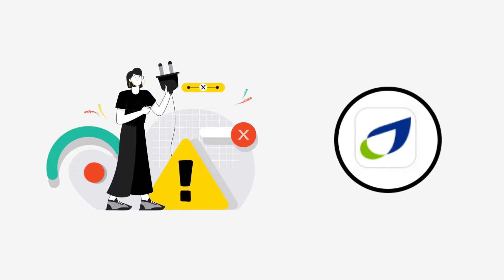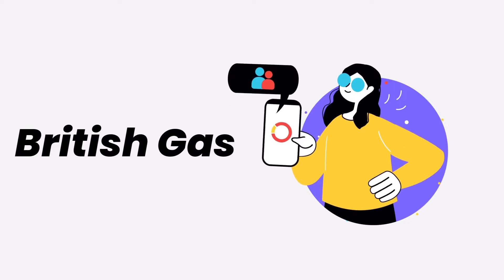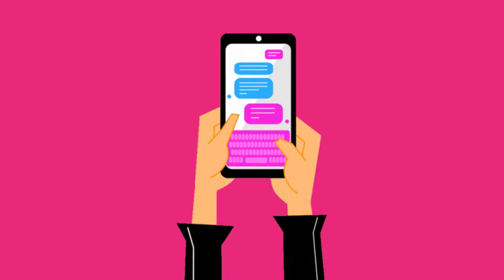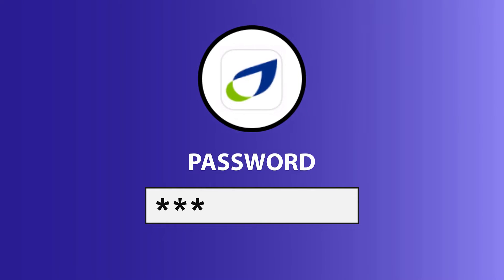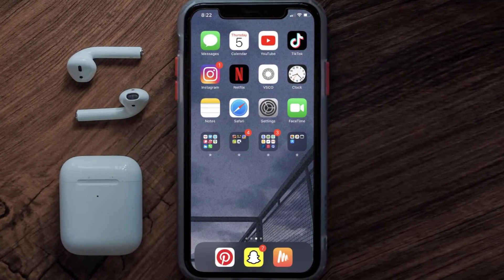It might be possible that you're not able to log in due to a connectivity issue, so first of all you need to make sure you have a strong and stable internet connection. Do a quick test by opening an app that runs on the internet, other than the British Gas app, and check if it's working. You can also try switching from Wi-Fi to mobile data and vice versa — doing this might help you log into your British Gas mobile app.